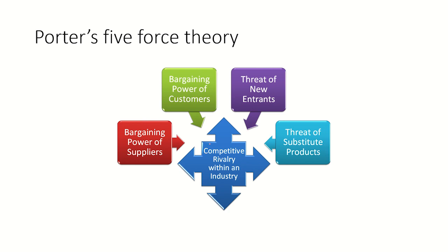The first one is the competitive rivalry within an industry. Let us first understand the meaning of the word industry. Industry is the homogeneous set of firms. For example, we talk about the passenger car industry.